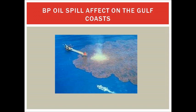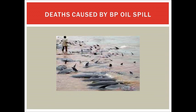Even though the gushing well was capped in July of 2010, oil is still washing up on shores, which might cause long-term damages to people living in the area. The initial oil rig explosion killed 11 people and injured 17 others. Over 8,000 animals, birds, turtles, and mammals were reported dead just six months after the spill.